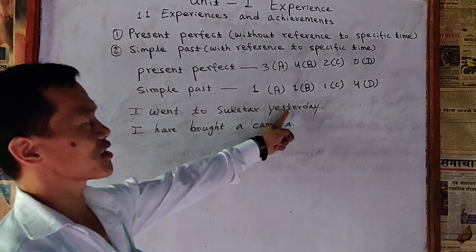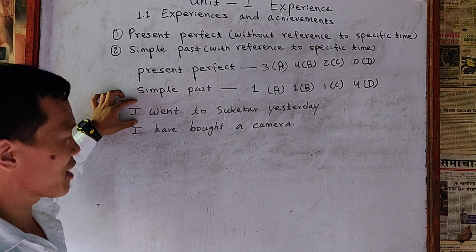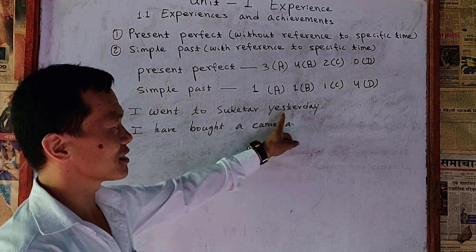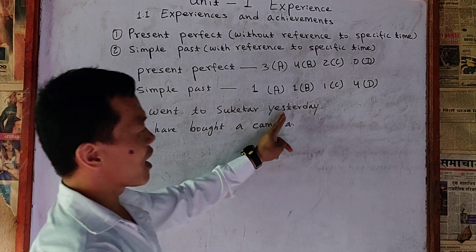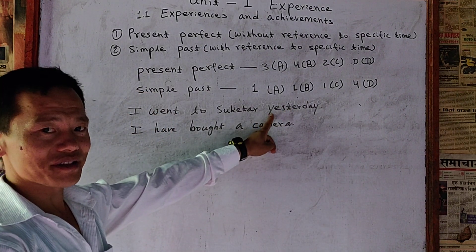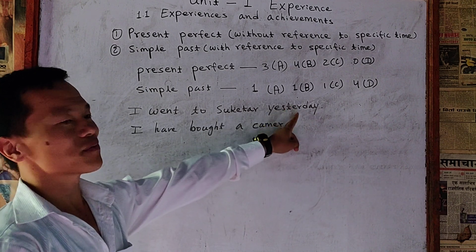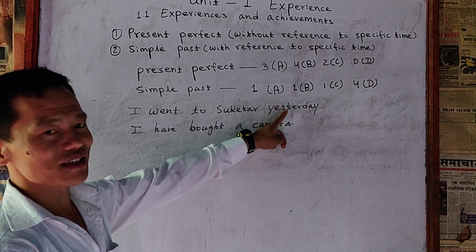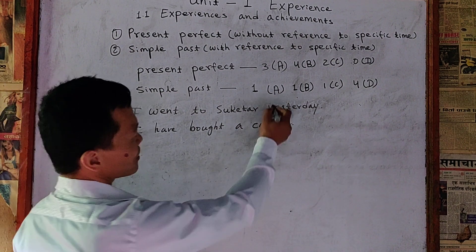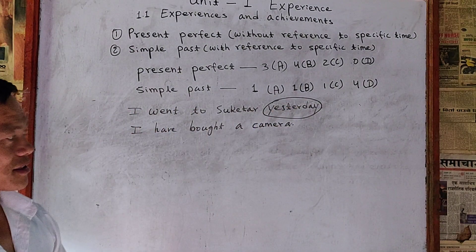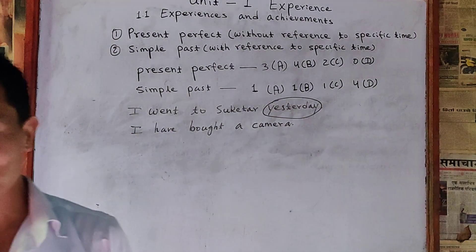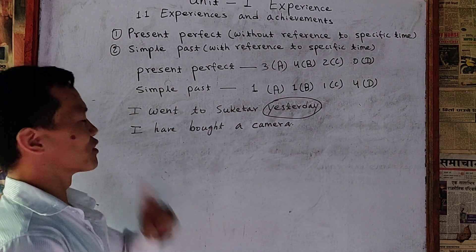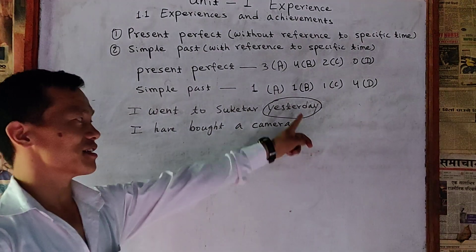I went to Sukhata yesterday — this example is from simple past. This sentence says that I have used here a reference, a reference to specific time in which the event happened, means yesterday. Yesterday is here as a reference, and the audience knows when did I go to Sukhata.